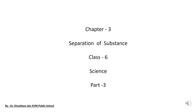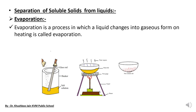Good morning students, hope you all are well at home and doing your studies regularly. In our previous class we completed all the matters of the separation of solids and solids. In today's class we are going to discuss the methods used to separate soluble solids from liquid or insoluble solids from liquid. There are two types of solution: first is miscible solution and second is immiscible solution.